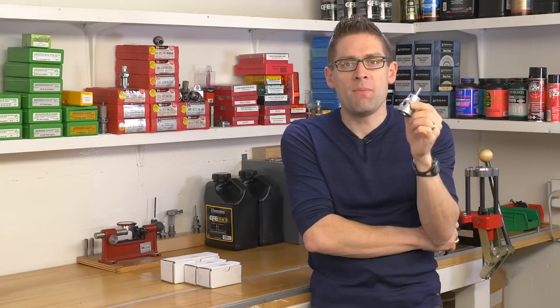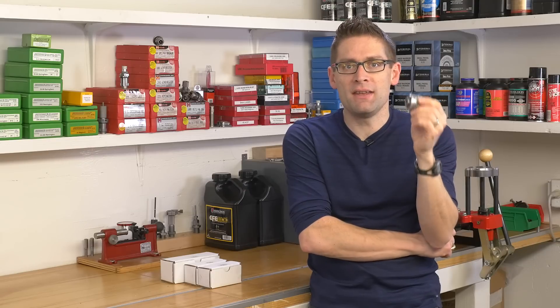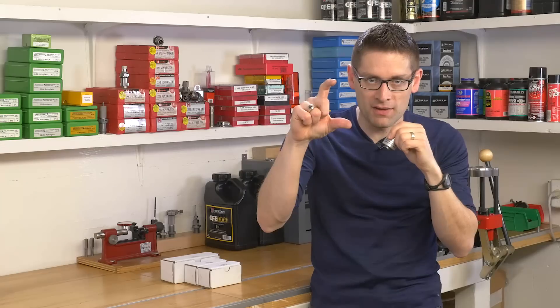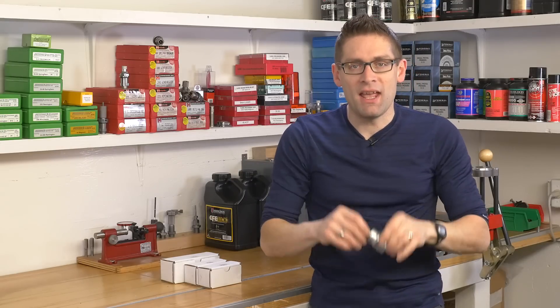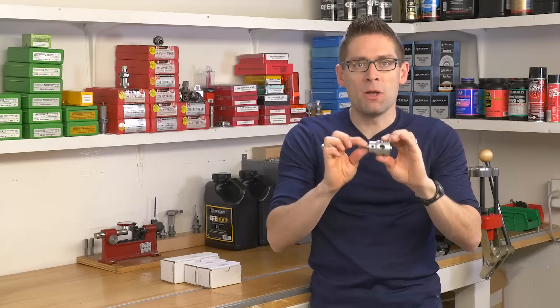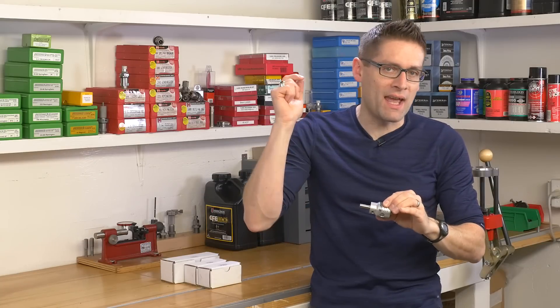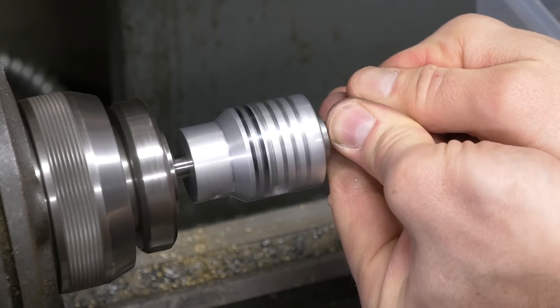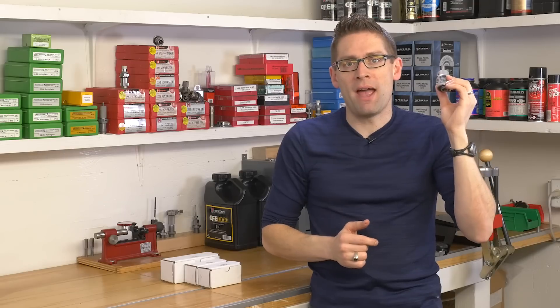Now this trimmer is unique because first it references the shoulder of the case rather than the case overall length for the trimming measurement and it's also powered by the tool of your choice. You can use a hand drill, you can use a drill press, a metal lathe, a milling machine. It's very compact, small package.